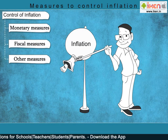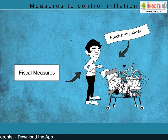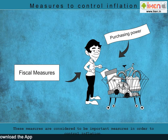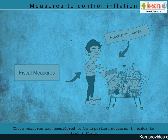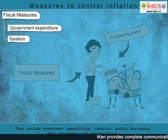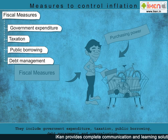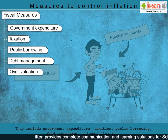Fiscal measures are adopted by the government to affect changes in purchasing power with the public. They include government expenditure, taxation, public borrowing, debt management, and overvaluation.